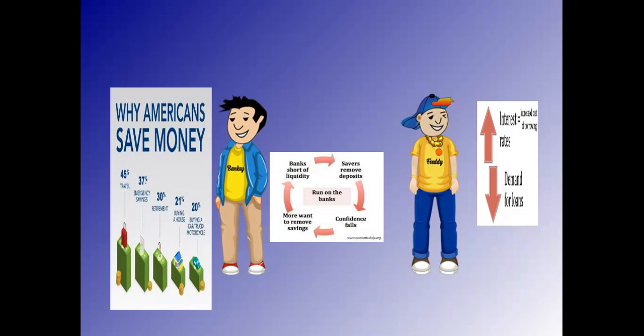emergency savings, retirements, buying a house, or buying a car, truck, or motorcycle. But unfortunately, because the banks are suffering at the moment, a lot of savers are removing deposits, which is causing confidence to fall. More want to remove their savings, which is causing banks to be short of money.